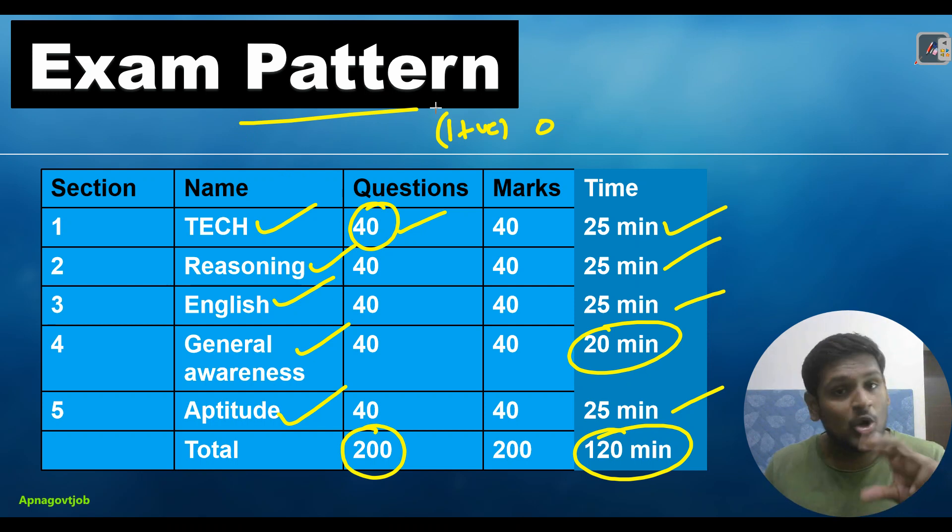Remember, there is no negative marking and no sectional cutoff - only overall cutoff. But sectional timing is there. Note down everything I explained. If you have any doubts, please comment below. Don't forget to join my Telegram channel, which is most important. I will meet you in the next video.